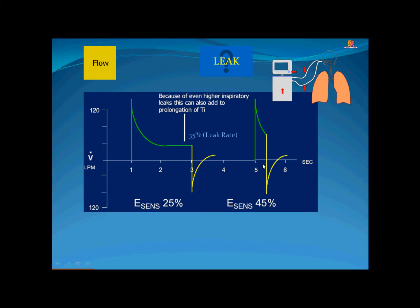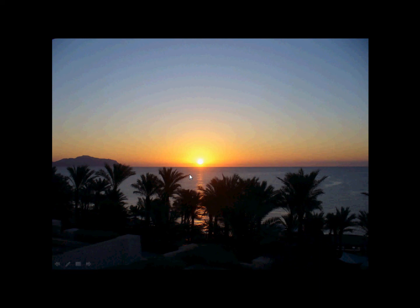As a safety mechanism, if the cycle is not terminated by flow, the machine terminates it after three seconds — so the patient gets a three-second inspiration regardless of their own cycle. The patient may take two or three breaths during this time and will fight the machine. The solution is to increase the expiratory sensitivity — for example, from 25 percent (10 L/min) to 45 percent (about 20 L/min). Since the leakage is 15 L/min, the machine will now sense 20 L/min and terminate the cycle. This shortens the inspiratory time and prevents patient-ventilator dyssynchrony.